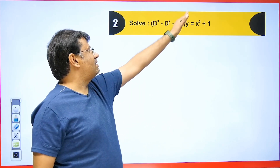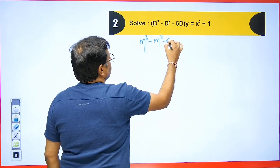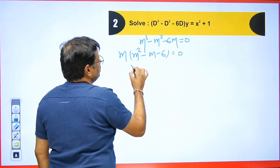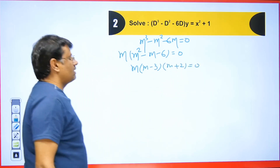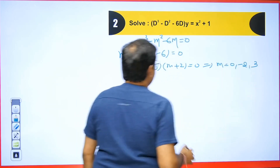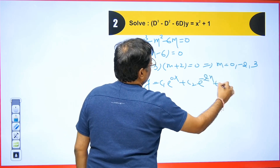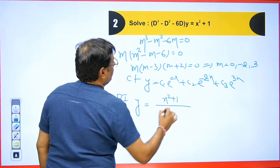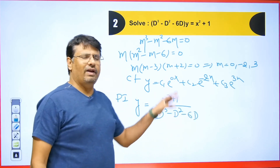Next question: D cube minus D square minus 6D y equals x square plus 1. For the CF: m cube minus m square minus 6m equals 0. Taking m common: m times (m minus 3) times (m plus 2) equals 0. The values of m are 0, minus 2, and 3. CF: y equals c1 e to the power 0x plus c2 e to the power minus 2x plus c3 e to the power 3x.